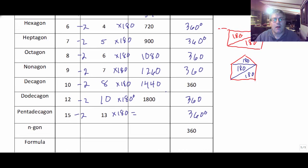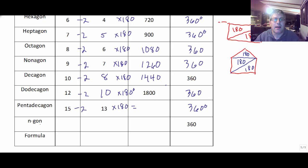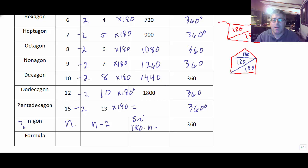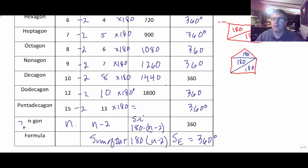So let's take a look at our formulas. Looking at the n-gon — where n is the number of sides — the number of triangles is n minus 2. So the sum of the interior angles must be 180 times (n minus 2). Our formula for the sum of the interior angles of any polygon is 180(n − 2), and of course the sum of the exterior angles is always 360. That's about as easy a formula as you're going to get.